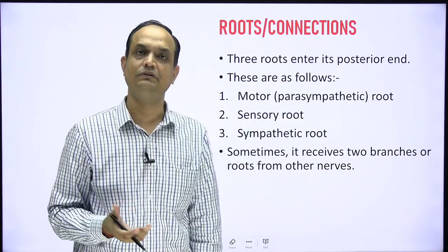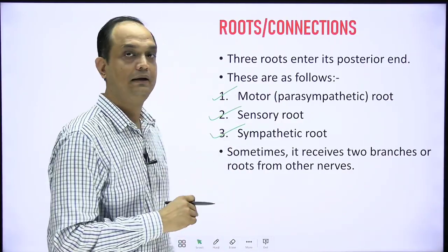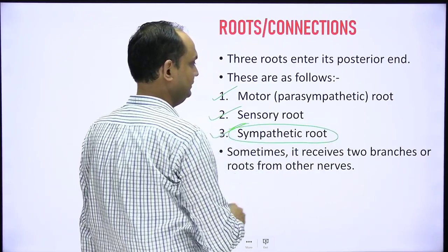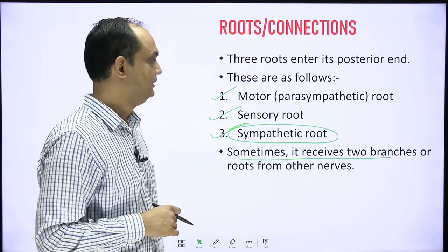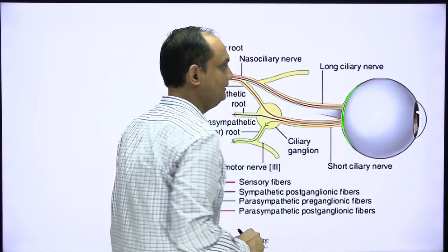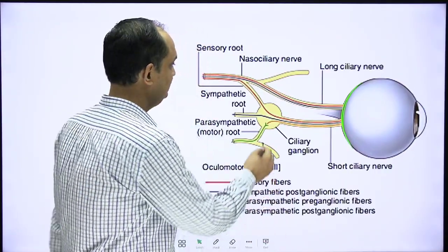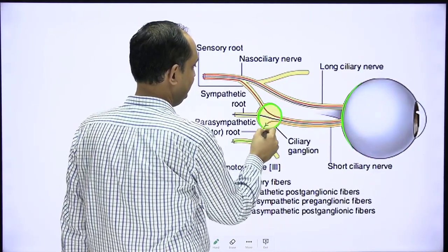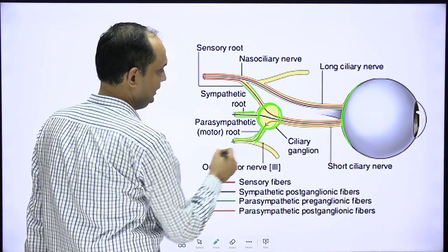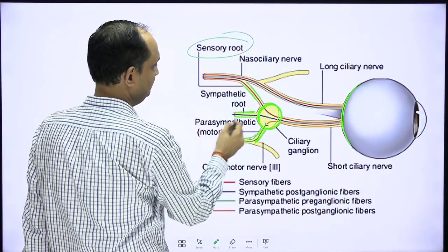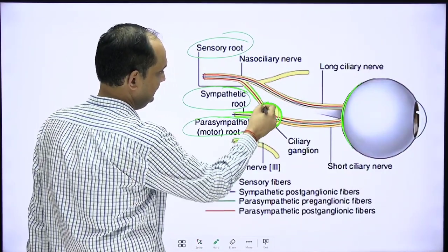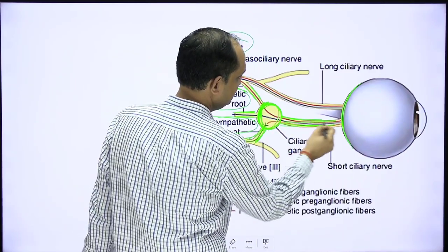The connections of the ciliary ganglia are organized as three roots: a motor root, a sensory root, and a sympathetic root. However, in the ciliary ganglia the sympathetic root is highly variable and sometimes absent, so it may receive only two roots. In the diagram the eyeball receives parasympathetic, sympathetic, and sensory supply. The three roots attach on the posterior side of the ganglia, while anteriorly you have the short ciliary nerve, which is the only branch of the ciliary ganglia.